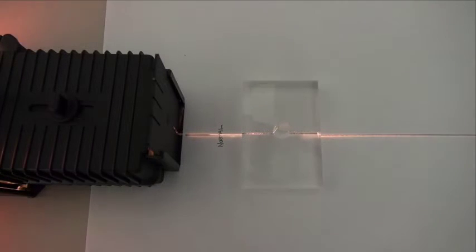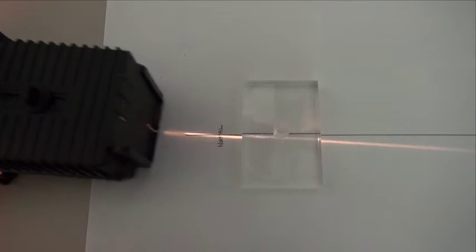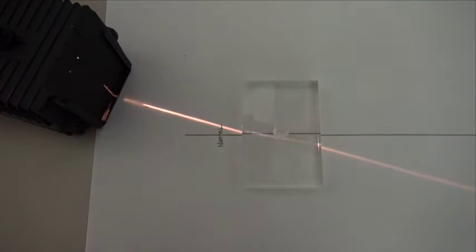Now if we turn the ray box at an angle we'll see this slowing down and it causes this bending of light.